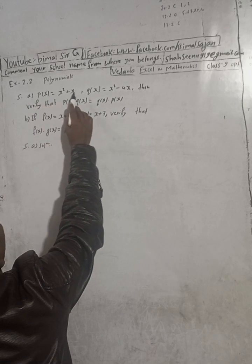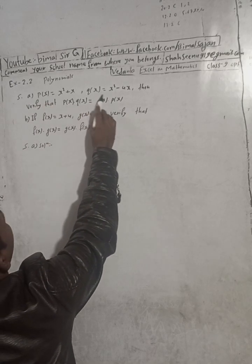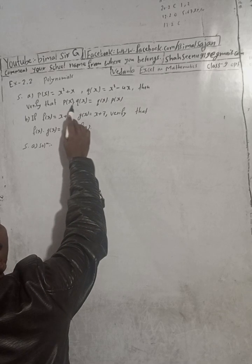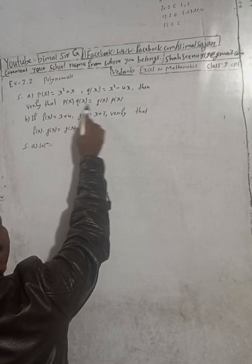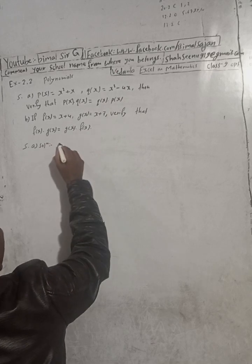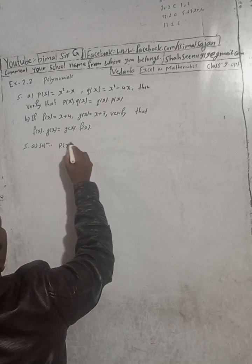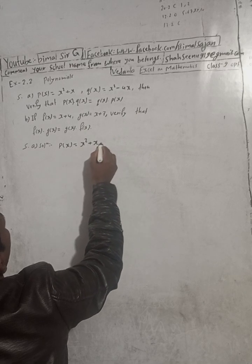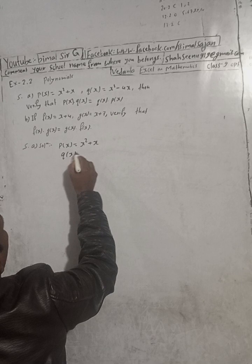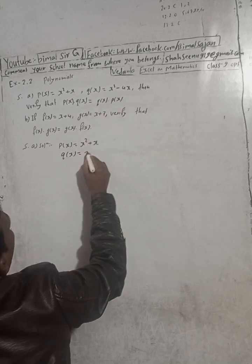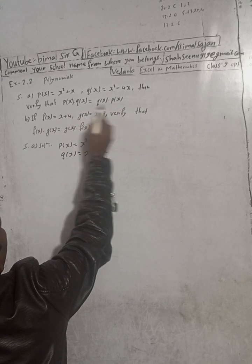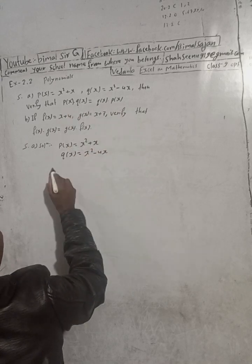A polynomial P(x) is equal to x² + x, and Q(x) is equal to x² - 4x. We have to verify P(x) into Q(x). So let us consider the LHS and the RHS. Given P(x) = x² + x and Q(x) = x² - 4x, first take the LHS.